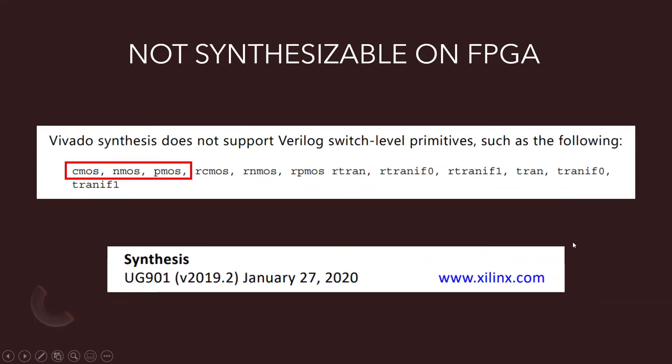Now, here's the answer on implementing on FPGA. We cannot. I actually created a constraints file and tried to synthesize it. And then I got an error. And then I went and looked into UG901, which is user guide 901 from Xilinx. It's their synthesis manual for Vivado. And right here under the Verilog primitive section, it says Vivado synthesis does not support Verilog switch level primitives. So here's our CMOS, NMOS, PMOS. These are all the other ones I was talking about. These are resistive controlled ones. The trans are bi-directional ones. So it's not synthesizable.